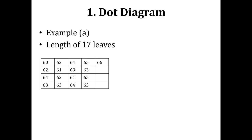We can use the dot diagram to see initial trends or patterns in our data. We are taking the example of the length of leaves, and we have 17 observations. We draw a horizontal line marked with a scale starting from the lowest observation, which is 60, going up to the highest observation, which is 66. The first observation is 60, so we place a dot over 60.